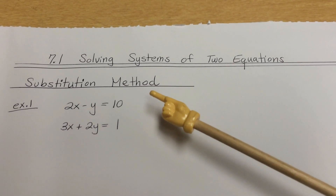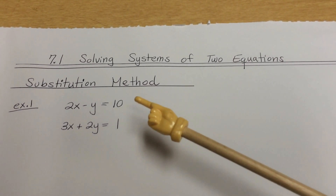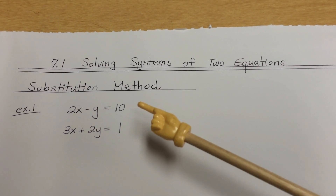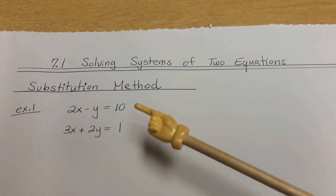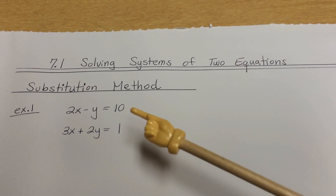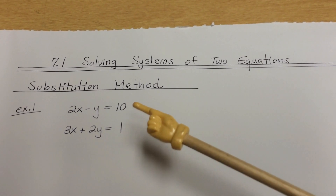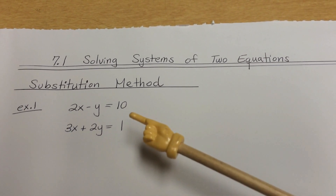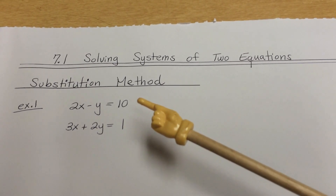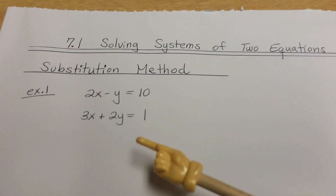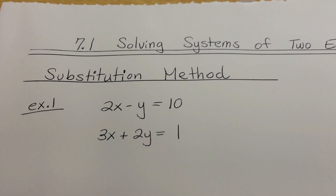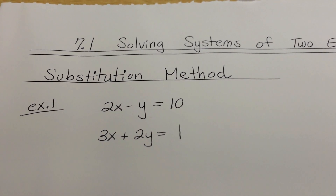The substitution method says that I'm going to take an equation, fix it up, and then substitute it into another equation and start solving for it. Your whole goal is to have one variable in that first equation so you can solve for x using algebra, and then substitute it back into the other equation to solve for y. It doesn't matter if you solve for x first or y.